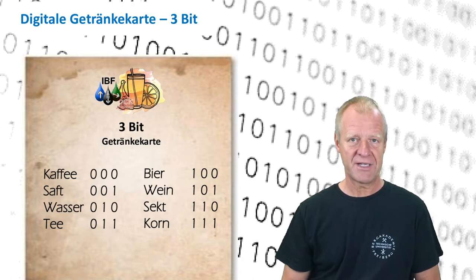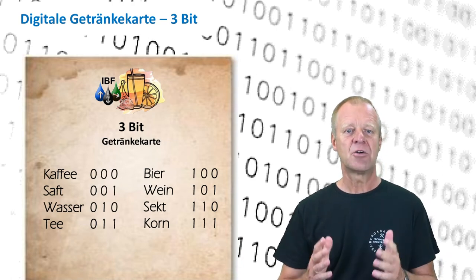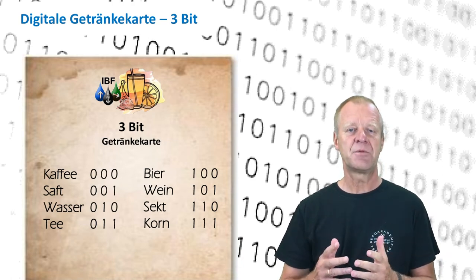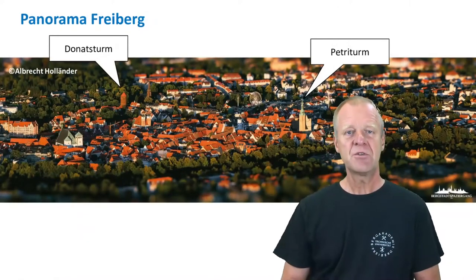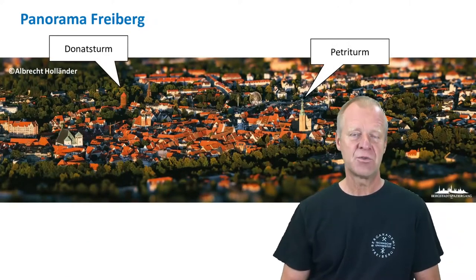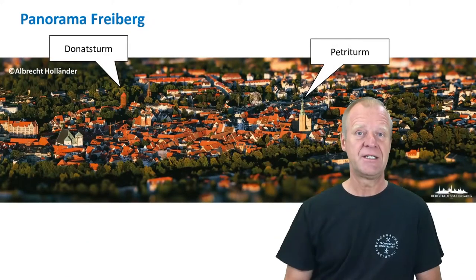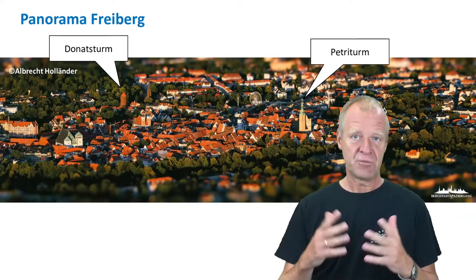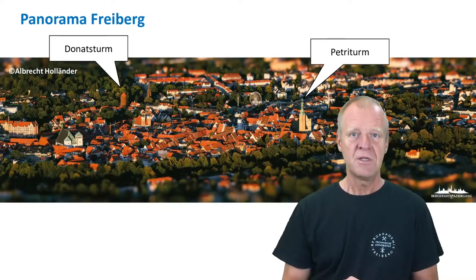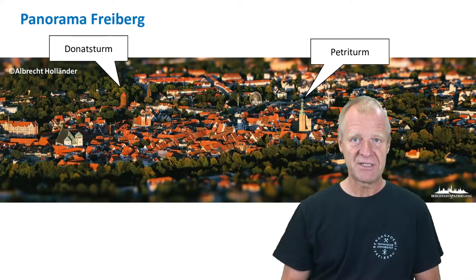As we have done with this menu card, we can use the same method to specify any other thing. For example, the points of a compass. Let's imagine we are downtown in our beautiful old city of Freyberg. We are at the Donuts Tower, and we want to specify the compass direction, that is the azimuth of the Petri Tower.